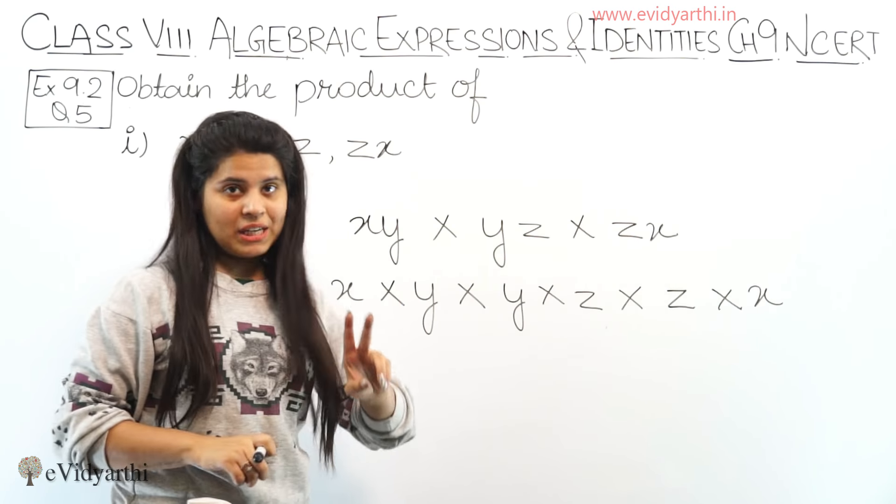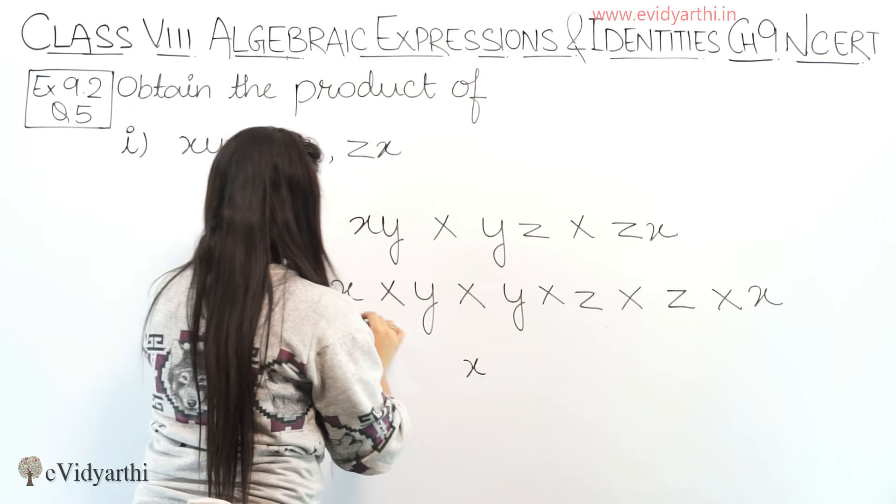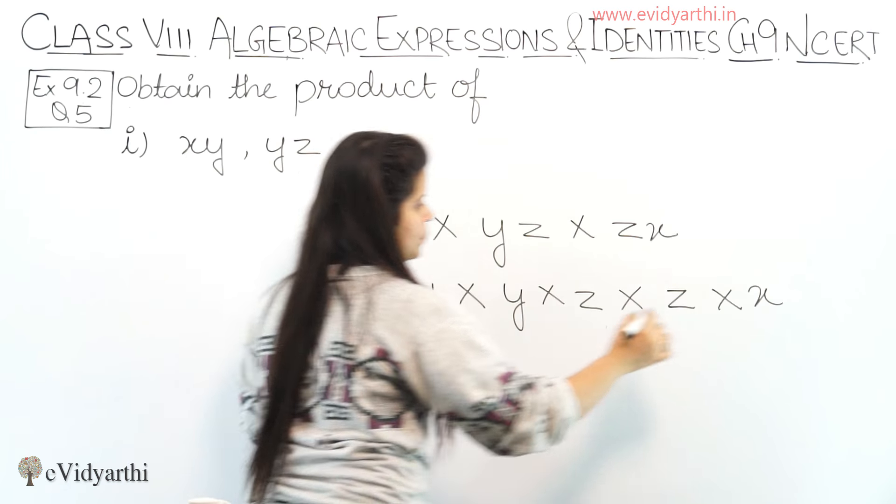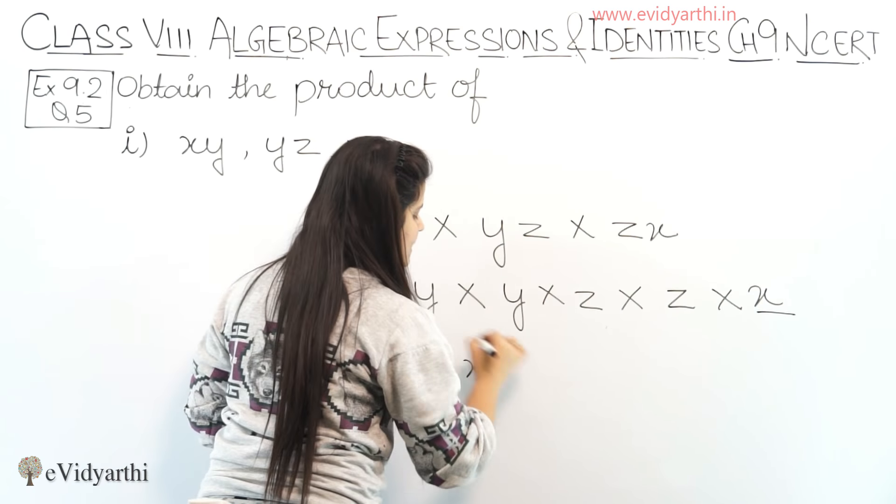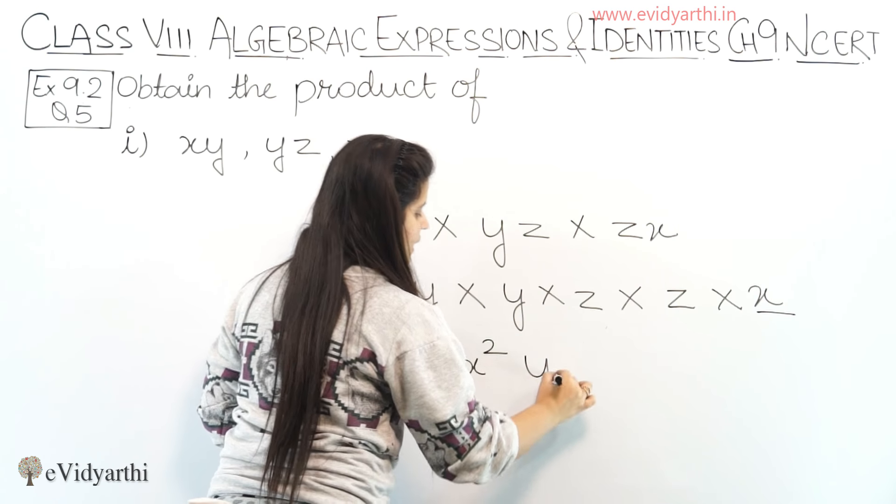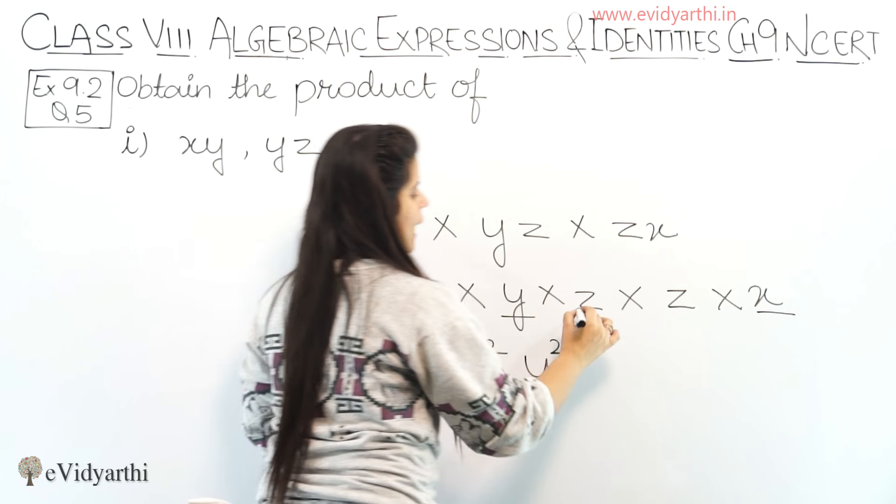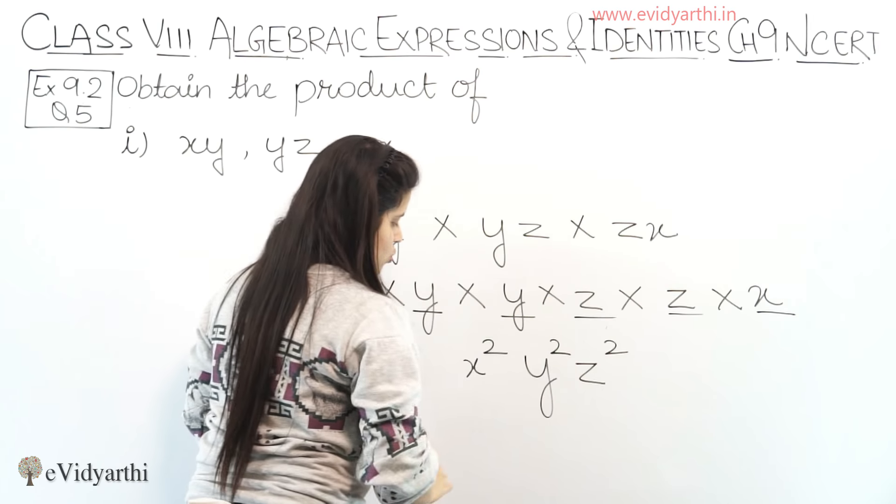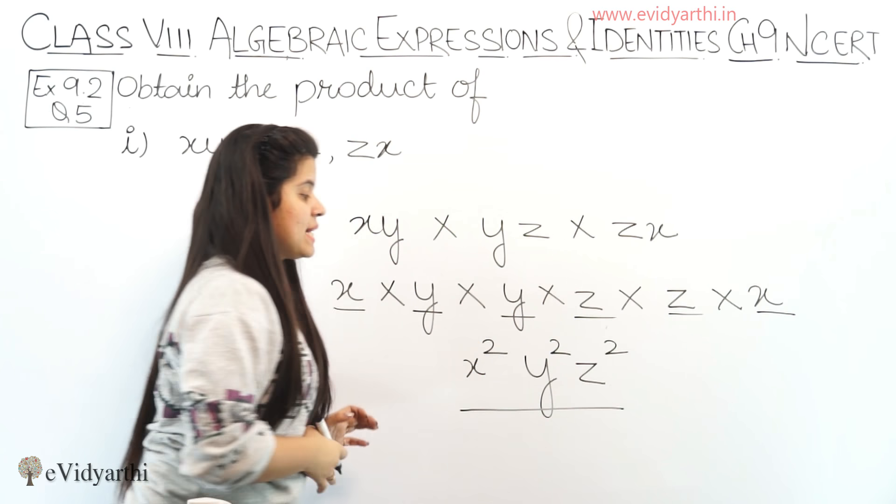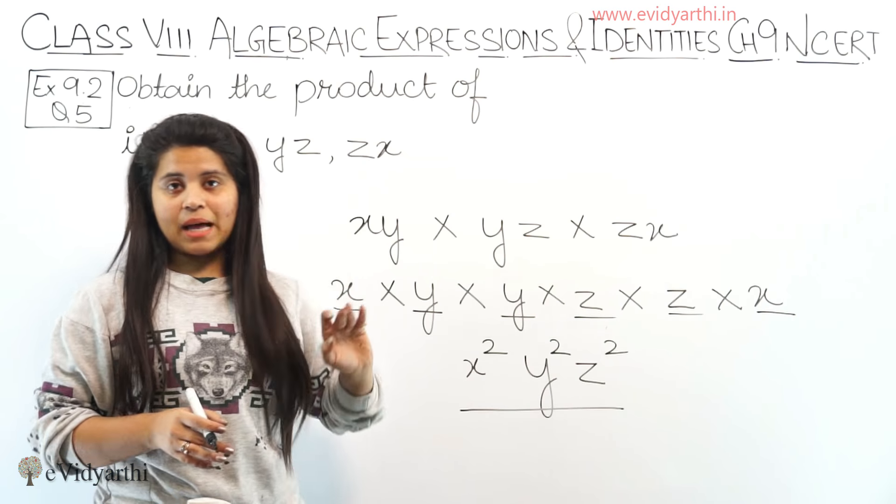Similarly, yz is y into z and zx is z into x. Now, if we look at x, y, z, there are three variables. x is 1, 2, so two times, this means this will be x square. Now, we have y, which is also two times. So this is y square. And then, 2 z's, so this will be z square.